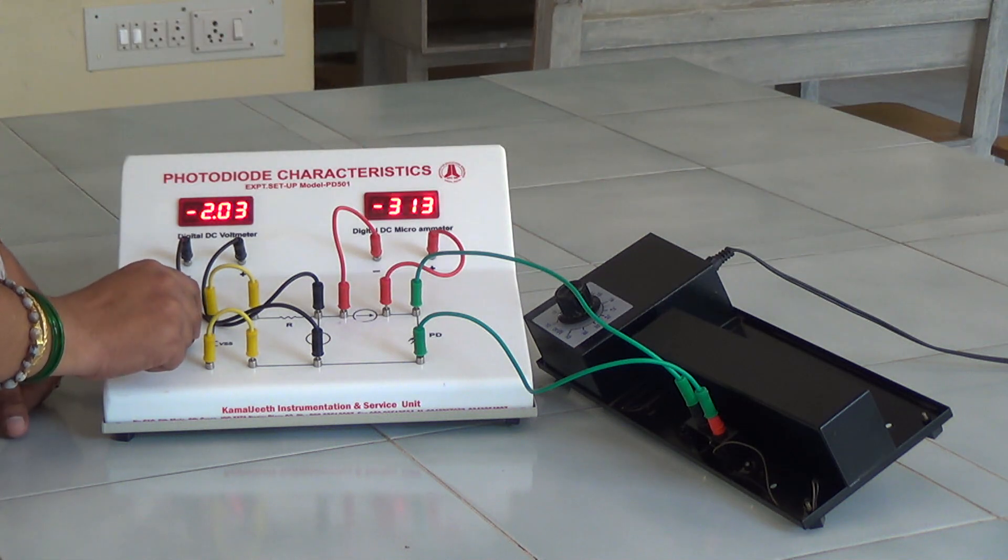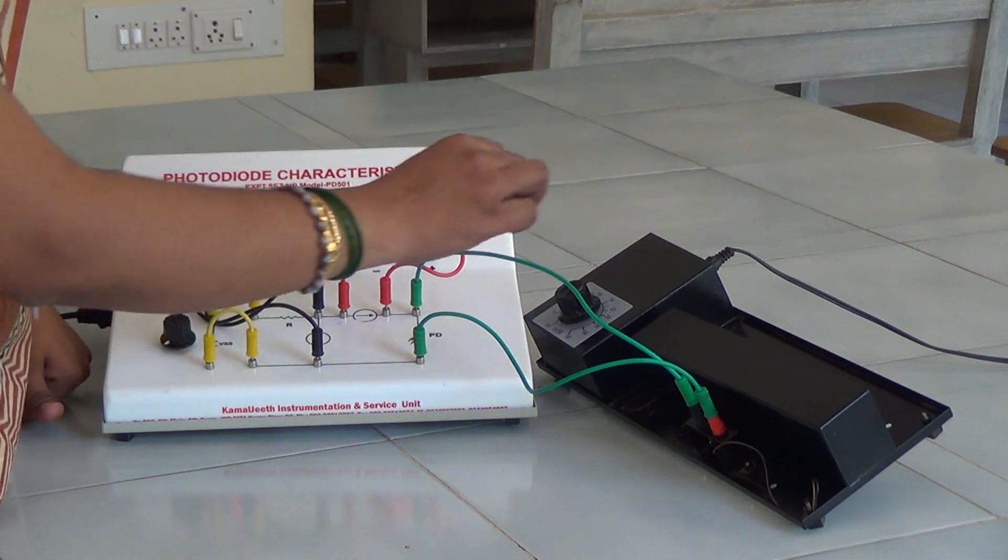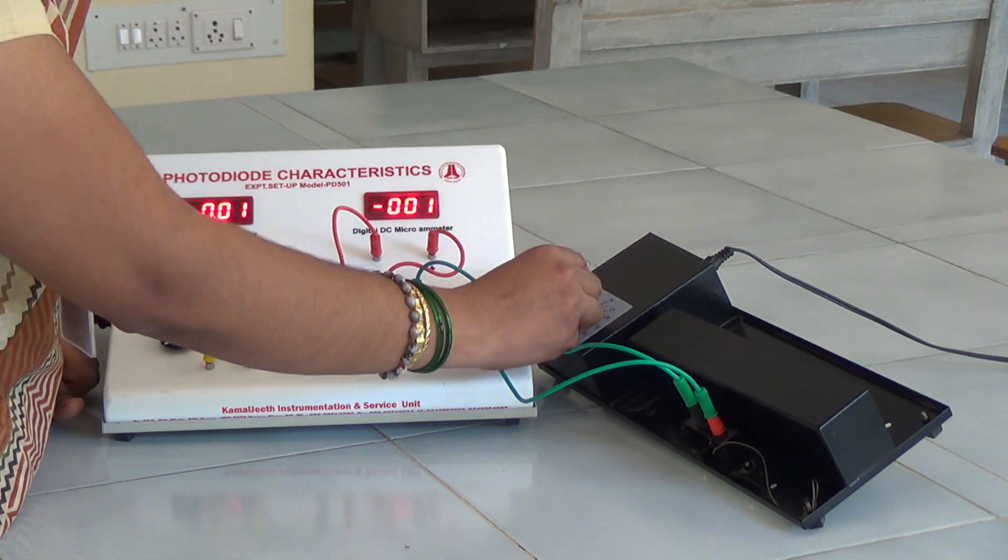And now we bring the knob to minimum. And then the power of the LED is changed to the next value using this knob.